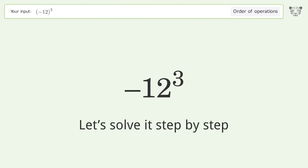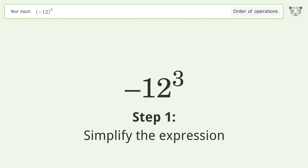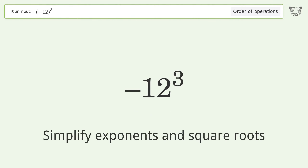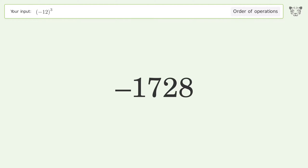Simplify the expression by simplifying exponents and square roots. Negative 12 to the power of 3 equals negative 1728. So the final result is negative 1728.